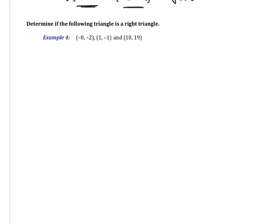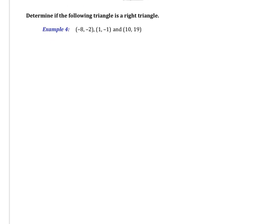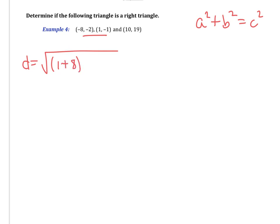Example four: determine if the following triangle is a right triangle. Recall that the Pythagorean theorem — a squared plus b squared equals c squared — only works for right triangles. After finding the three side lengths, we plug them into the Pythagorean theorem. For the first two points: distance equals the square root of (1 minus negative 8) squared plus (negative 1 minus negative 2) squared, giving 9 squared plus 1 squared, or the square root of 82.